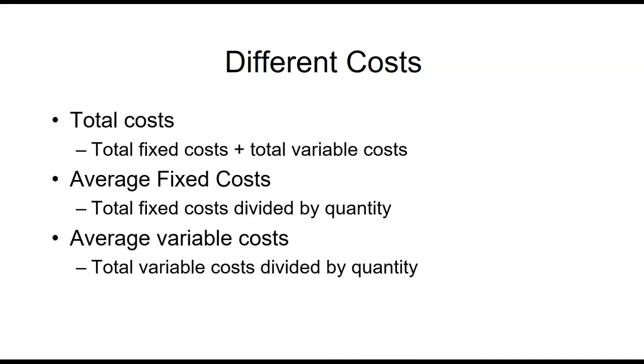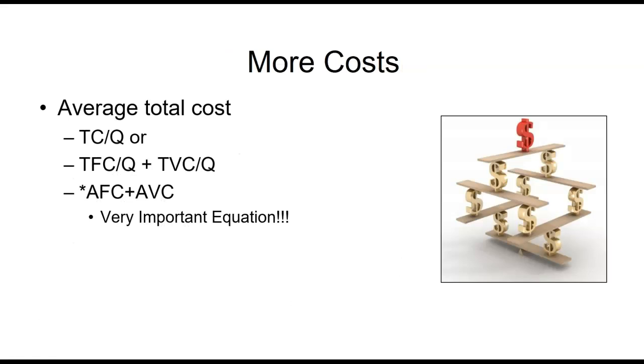We also know the average variable cost. Now we do want to use abbreviations, so average fixed cost would be AFC, average variable cost would be AVC, because we're actually going to be putting these as curves on the graph later. So we want to be able to not have to write out average variable cost every time. And average variable is the total variable cost divided by again the quantity of outputs. There's more. Average total cost is the total cost divided by the quantity. Or if the total fixed cost plus total variable cost equals the total cost, well if I put that all over Q, by the quantity, then my total fixed cost divided by my quantity, my average fixed cost, plus my total variable cost divided by the quantity, or my average variable cost, would then equal my average total cost.